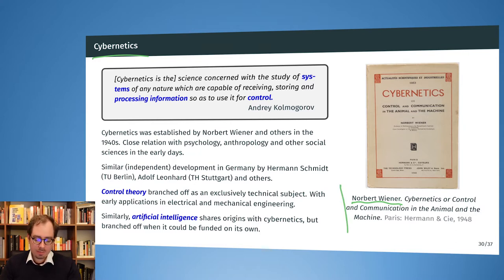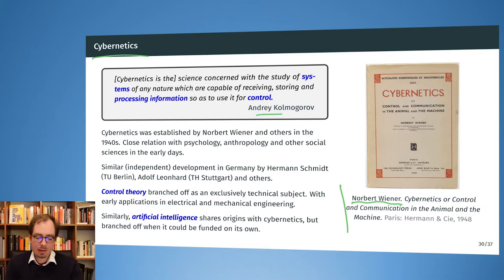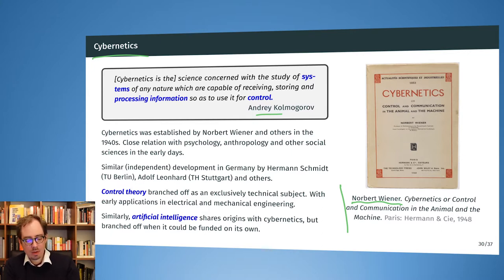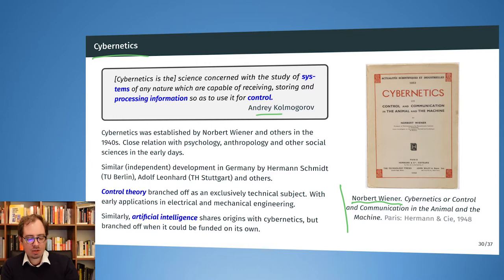The book is called "Cybernetics, or Control and Communication in the Animal and the Machine" — a groundbreaking book considering feedback mechanisms. Andrei Kolmogorov, a very famous researcher, called cybernetics the science concerned with the study of systems of any nature which are capable of receiving, storing, and processing information so as to use it for control.